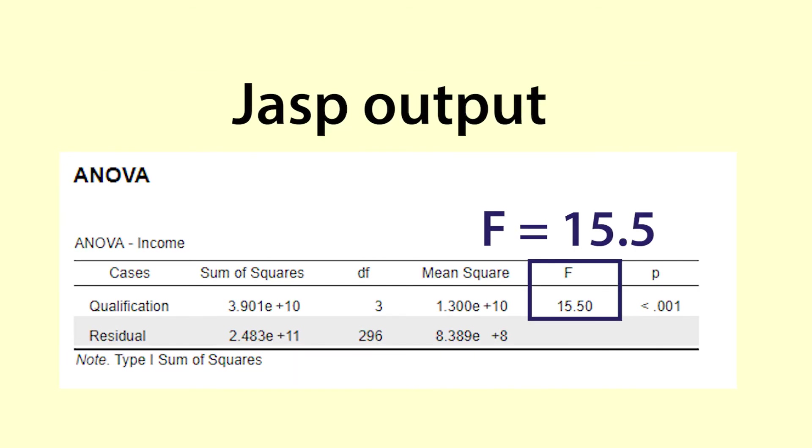The same analysis using JASP yields the same f-statistics as it should. The p-value here is given as less than 0.001 which is another way of saying a number close to 0.